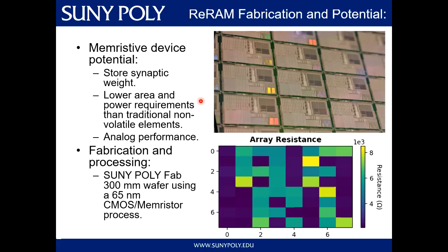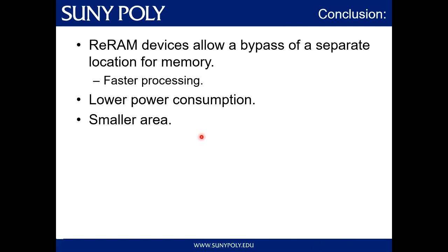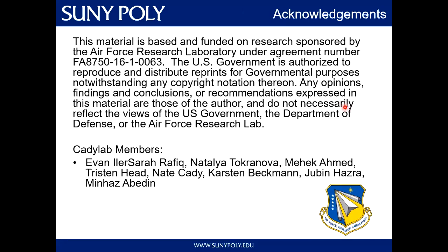All of this has been fabricated at our SUNY Poly Fab, where we have a 300 millimeter wafer using our current 65 nanometer CMOS memristor process, allowing for in-house use of clean rooms. Through these processes, I've done work such as creating a picture in an 8x8 array from AFRL, one of our sponsors, showcasing that these devices can be put into a specific resistance value and kept at that value. In conclusion, ReRAM devices allow a bypass of separate location for memory, allowing for faster processing, lower power consumption, and smaller area. I acknowledge AFRL for sponsoring this work.